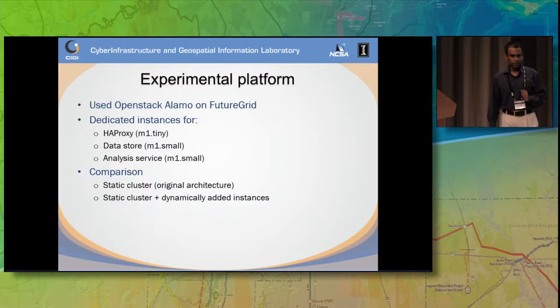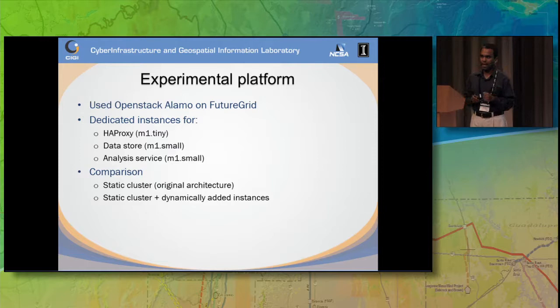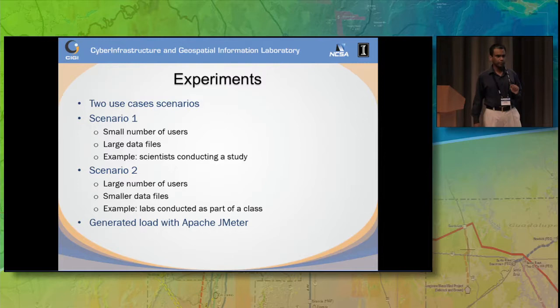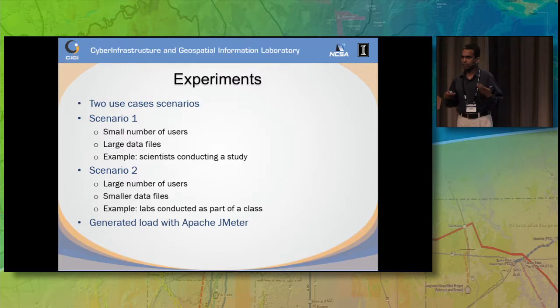We conducted experiments on FutureGrid resources. We created an HA Proxy store acting as our queuing mediator, with a data store as well as the analysis server. We compared a static cluster with 5 static VMs against a new strategy combining a static cluster with a dynamic component adjustable based on load. We studied two scenarios: the first with a small number of users — around 16 — dealing with relatively large data files, corresponding to scientists conducting studies; and the second with a large number of users in an online classroom environment. We tested using Apache JMeter.